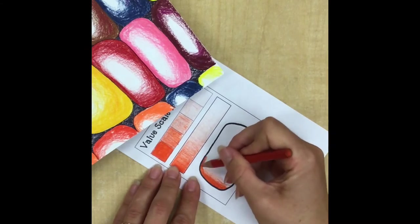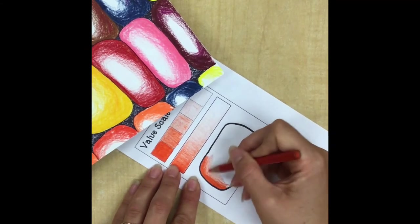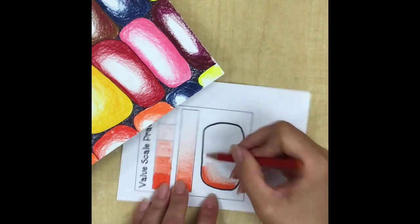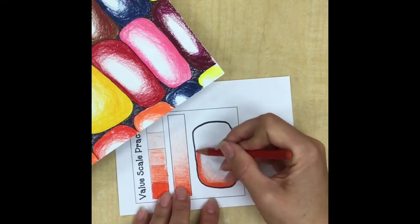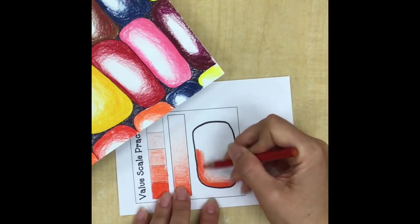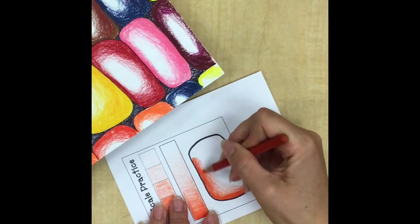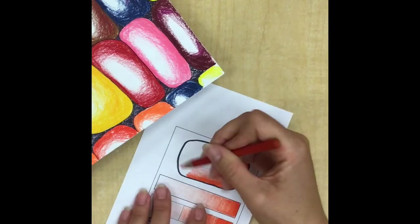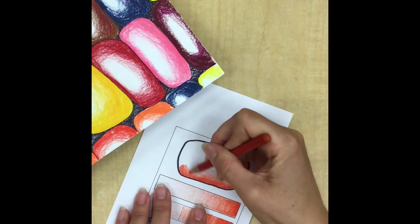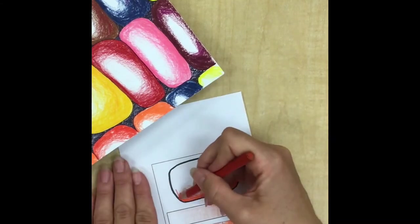Kind of like we're doing a bunch of different sections of value scale as we move our paper around, always pushing hard at the edge and then getting lighter in the center.